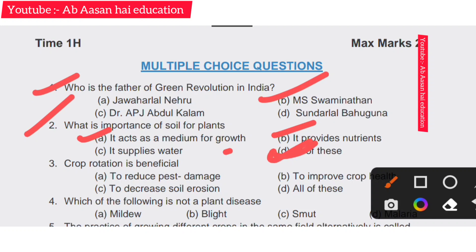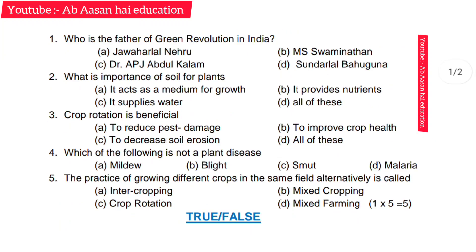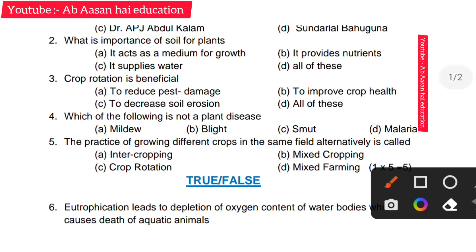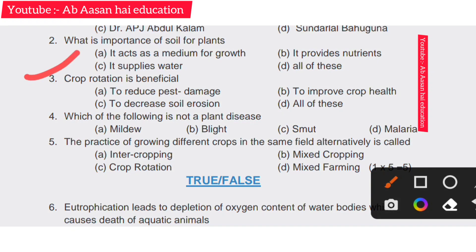Third question: crop rotation is beneficial for reducing pest damage, also to improve crop health and to decrease soil erosion. So all of these is the right answer.